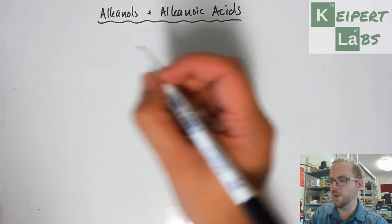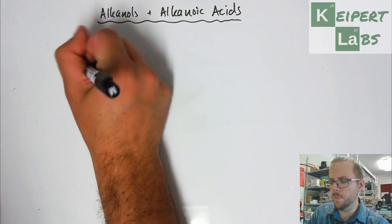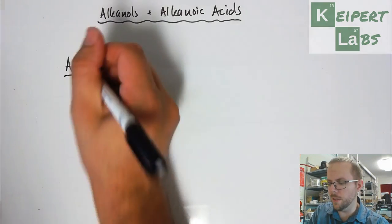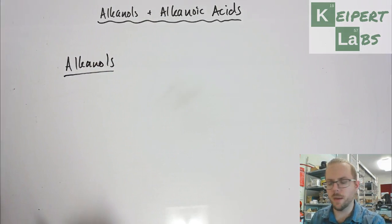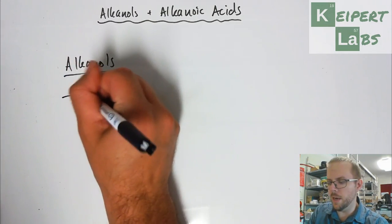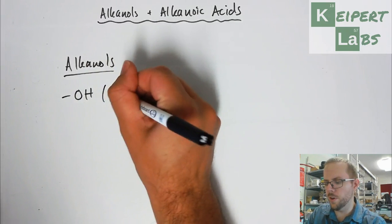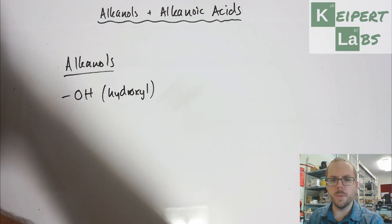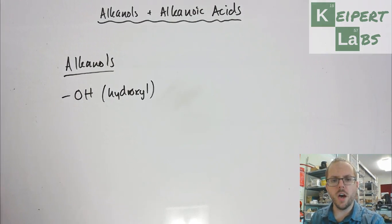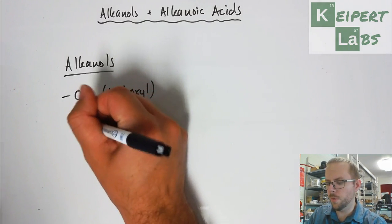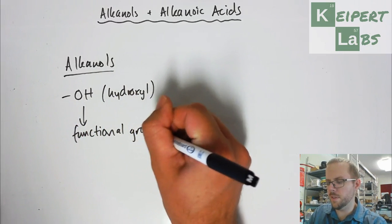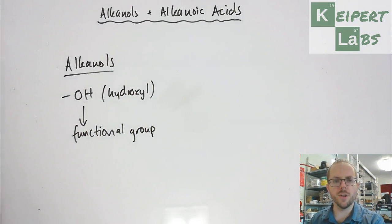Let's have a quick recap of alkanols. We've met this family of compounds before when we've looked at hydrocarbon naming rules. They contain an OH group, which is also known as a hydroxyl group. That hydroxyl group is our functional group. This is the thing that decides that a substance belongs to the alkanol family.